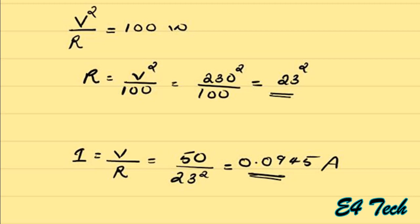We have power P = V²/R = 100 watts, so R = V²/P = 230² / 100 = 529 ohms. The lamp resistance stays fixed regardless of the connected voltage. So the current drawn at 50 volts is I = V/R = 50 divided by 230² divided by 100.